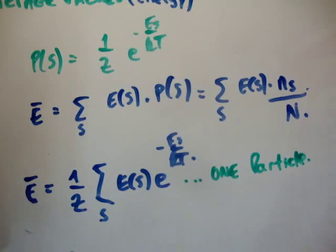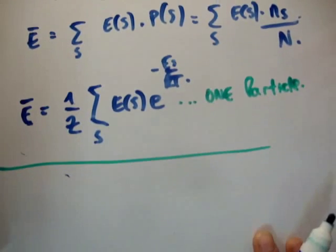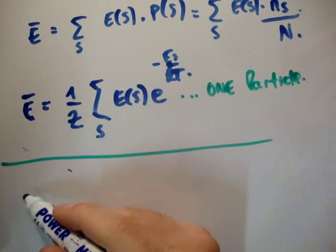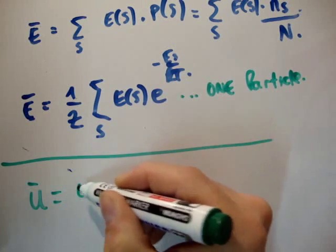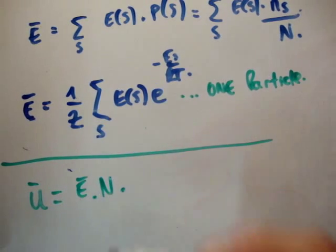So how do we get the average energy of all the particles? Well, that's very straightforward. I'm going to use the letter, the placeholder u, for the total energy of the system. So u bar is going to be equal to e bar times the total number of particles.